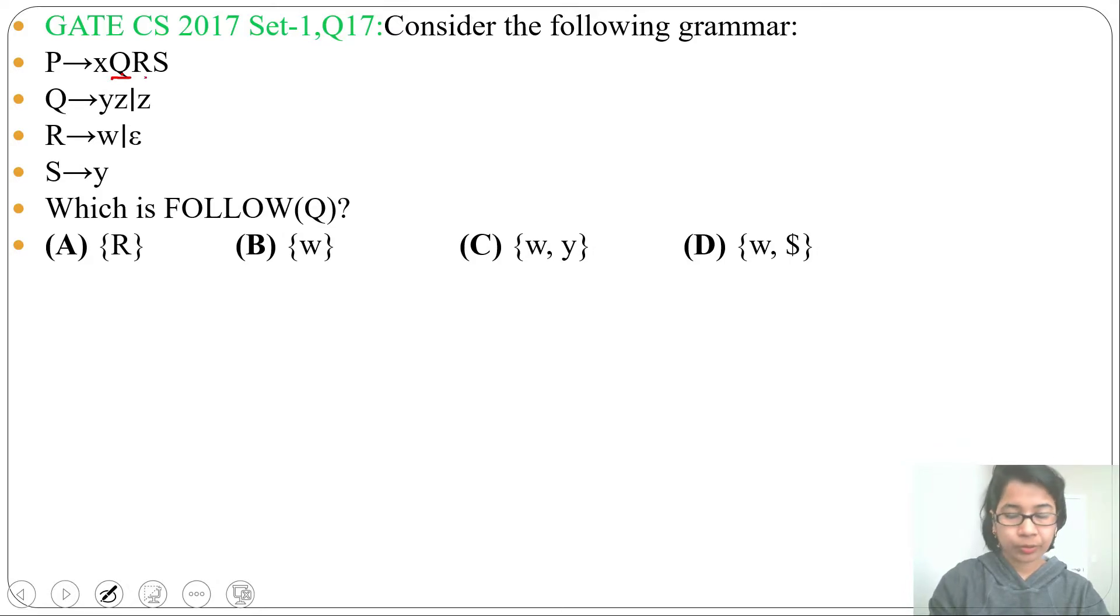So FOLLOW of Q will be FIRST of R. And what is FIRST of R? FIRST of R will be w and epsilon. But epsilon cannot be part of FOLLOW. In place of R, if we write epsilon, then the production will be P derives xQS. In place of R we're writing epsilon.